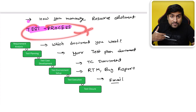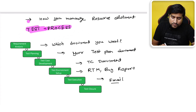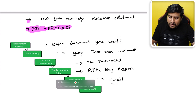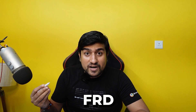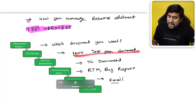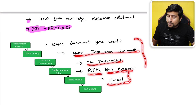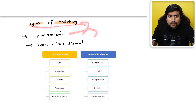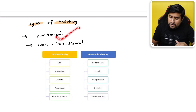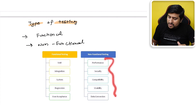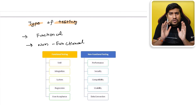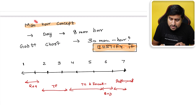To answer this, think about the STLC — Software Testing Life Cycle. In the requirements phase you need documents like BRS, FRDs, SRS. Then you have your test plan, test cases, RTM, bug report, and email. You also need to state what type of testing you will do — functional and non-functional — and clarify what is out of scope, like performance or security testing.